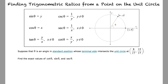Find the exact values of cotangent of theta, sine of theta, and secant of theta. From the chart before, we stated that cotangent is equal to x over y, which means that it is equal to (8/17) over (15/17). Dividing these two fractions yields 8/15.